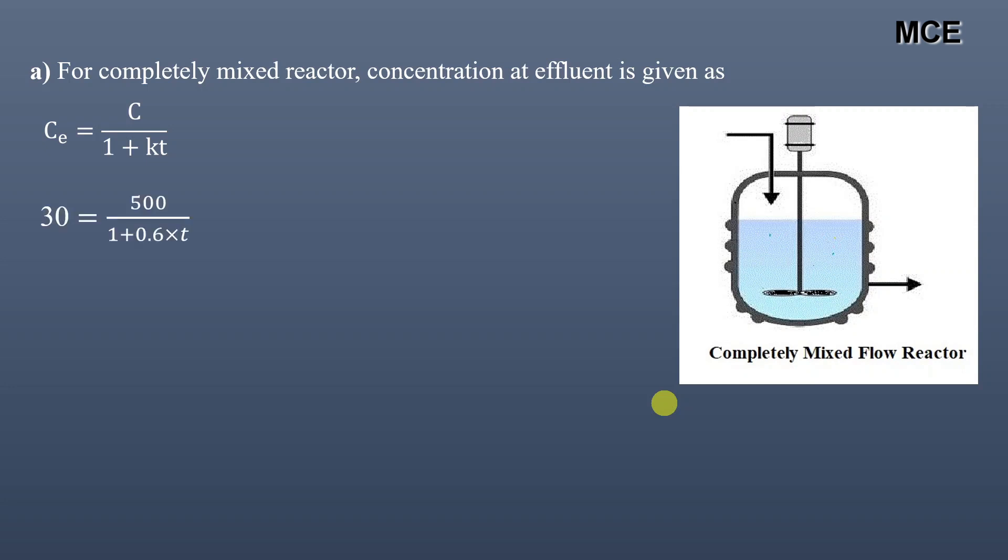First we will find retention time of a completely mixed flow reactor. For a completely mixed flow reactor, concentration at effluent is given as Ce equals C divided by 1 plus Kt. Putting values of Ce, C and K we get 30 equals 500 divided by 1 plus 0.6 times t. We will divide 30 by 500, so we get in the next step 1 plus 0.6t equals 16.667.